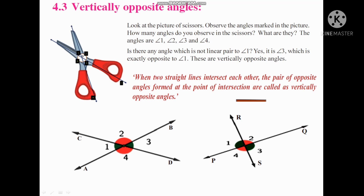In exercise 4.3, first we need to understand vertically opposite angles. What are vertically opposite angles? Look at the picture of scissors and observe the angles marked in the picture. The angles are marked as angle 1, angle 2, angle 3, and angle 4.